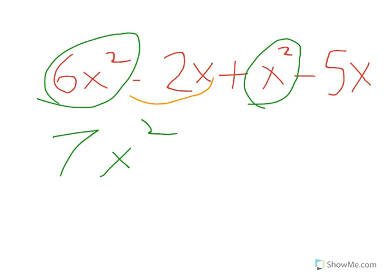Then I'll add the terms with the same x's: minus 2 minus 5 is minus 7x. That's my answer, 7x² minus 7x. It's as easy as that.